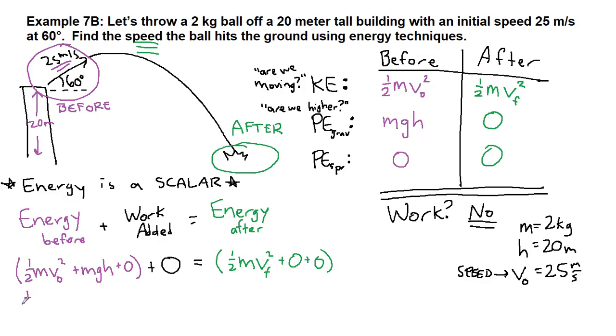And then we can start to plug these things in. So we have one-half times two times 25 squared plus two times 9.8 times 20 equals, and on the right side, we have one-half times two times v final squared. The right side, one-half times two is one, so we have v final squared. And on the left, we can plug all of that into our calculator.